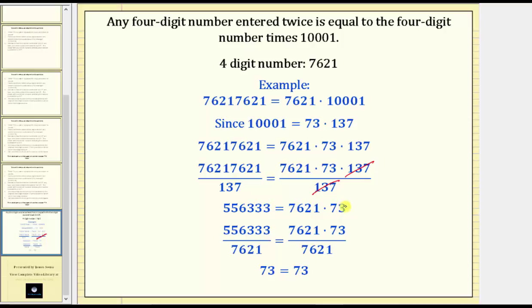And then from here, the last step was to divide by the original four-digit number. And again, focusing on the product, if we divide this product by the original four-digit number, once again, notice how it simplifies nicely because the four-digit number divided by itself simplifies to one, always giving us a result of 73.